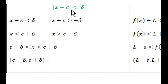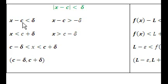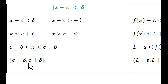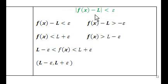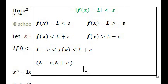The absolute value inequality can be rewritten as: negative delta less than x minus c less than delta. Solving for x on both sides, we get x is greater than c minus delta and x is less than c plus delta, which can be rewritten as an interval. I'm doing the same thing for the f of x side, just unraveling the definition.